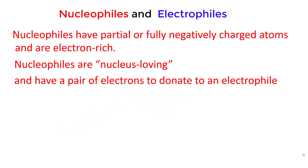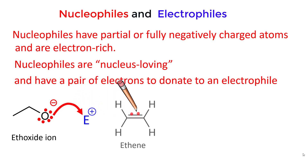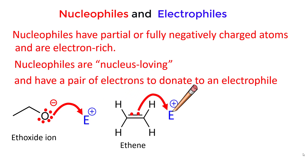The pair of electrons to be donated can be a non-bonding lone pair, such as lone pairs of electrons found on the oxygen in the negatively charged ethoxide ion. Or the two electrons can be in a pi bond, such as in the neutral compound ethene.